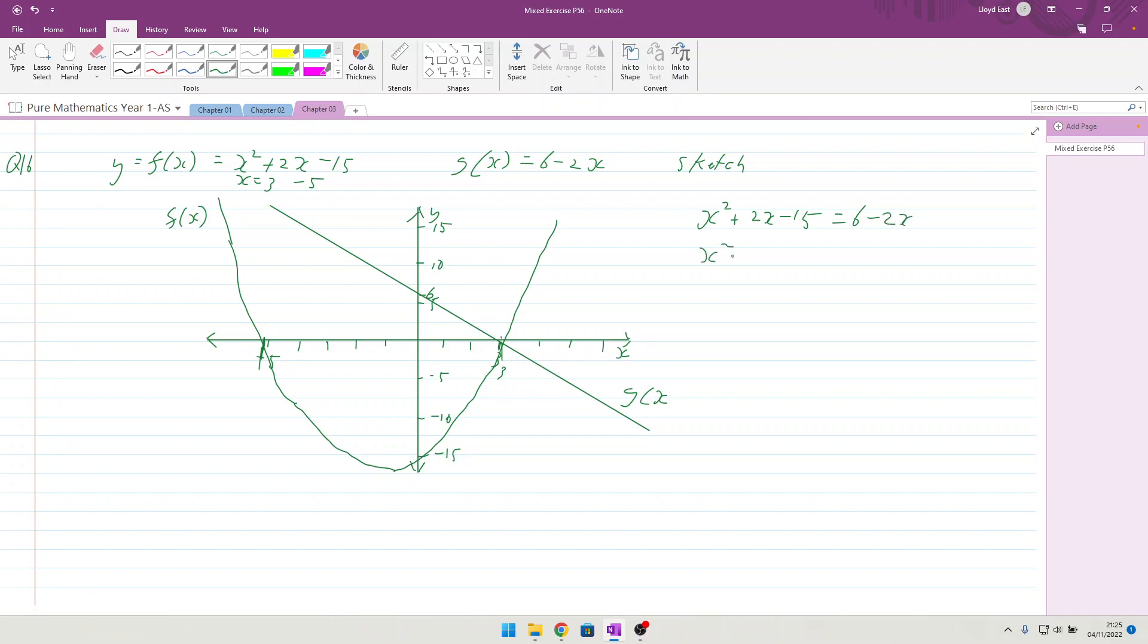So x squared, bringing that across becomes plus, so plus 4x minus 21 equals 0. So we get x equals... and x equals... straight into the calculator for solving the quadratic. Okay, minus 21, and we get x is equal to 3 as predicted and x is equal to minus 7, which tallies with the picture that we have drawn here. Okay, find the coordinates of intersection.